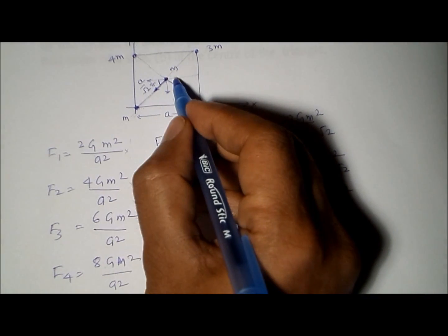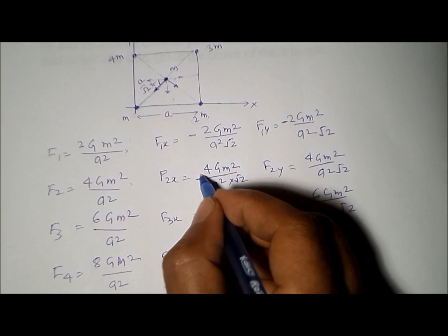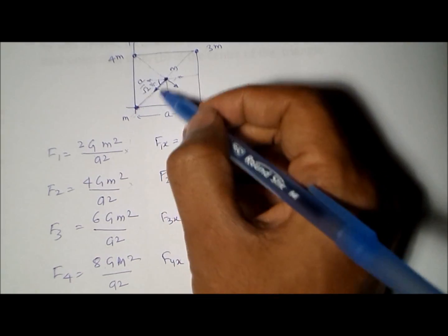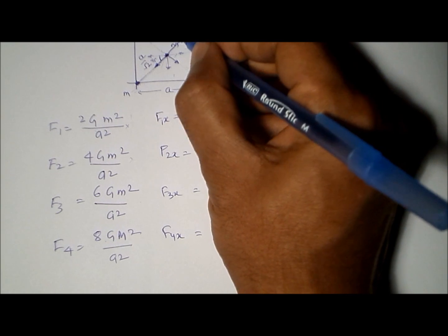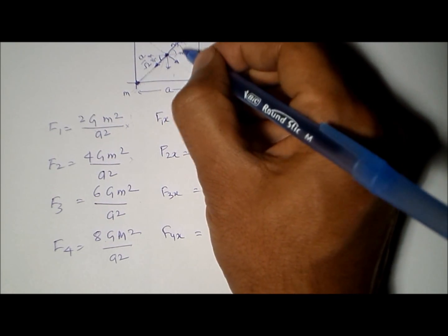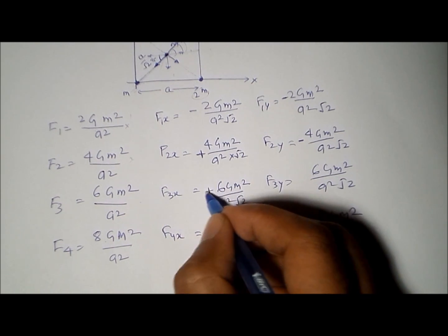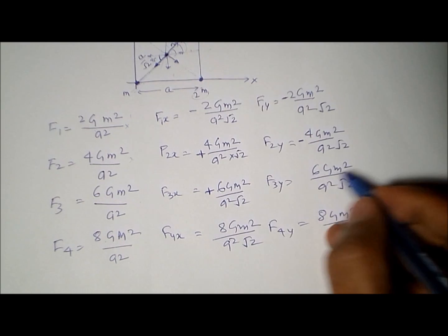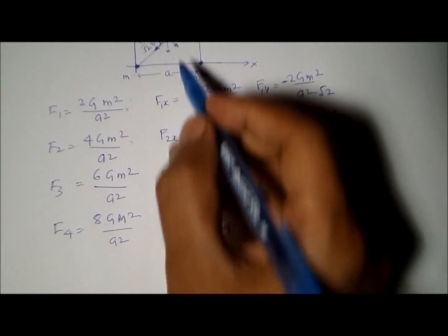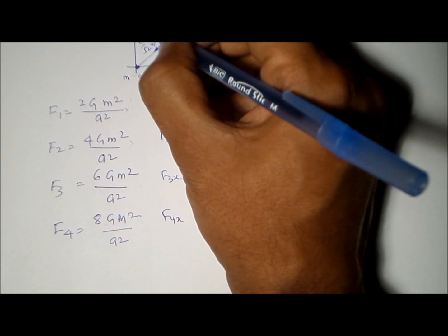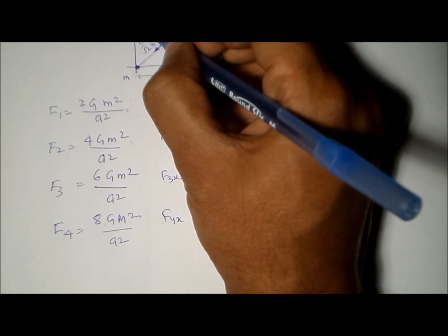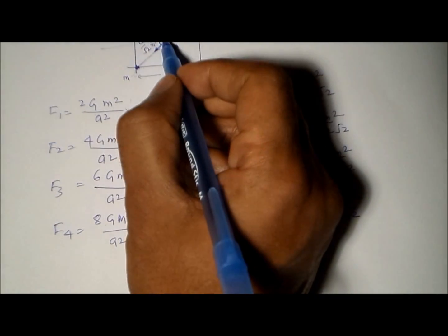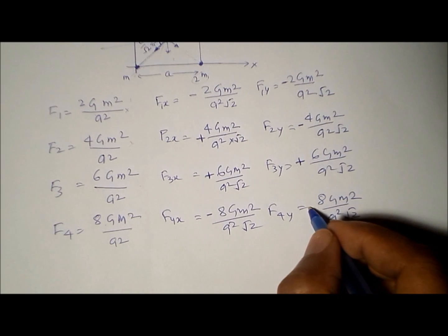Now we assign signs. The force due to the second particle: its x-component is in the positive x-direction (+), and its y-component is in the negative y-direction (−). The force due to the third particle: its x-component is in the positive x-direction (+), and its y-component is in the positive y-direction (+). The force due to the fourth particle: its x-component is in the negative x-direction (−), and its y-component is in the positive y-direction (+).